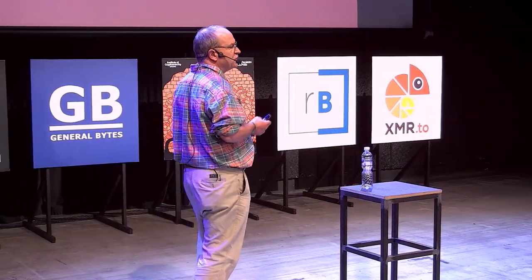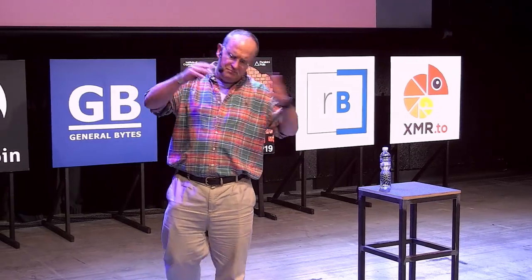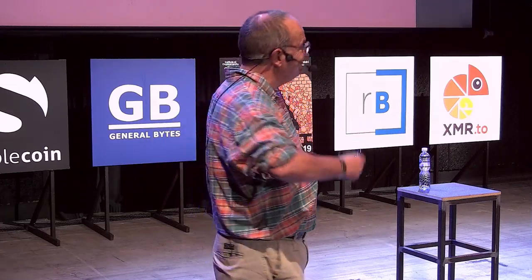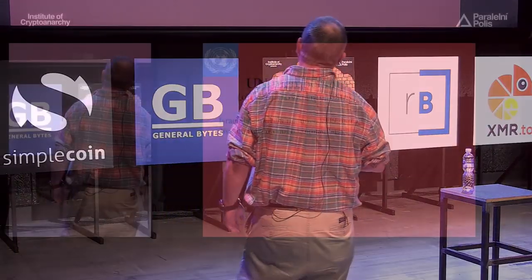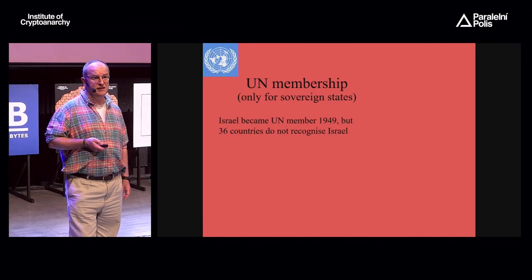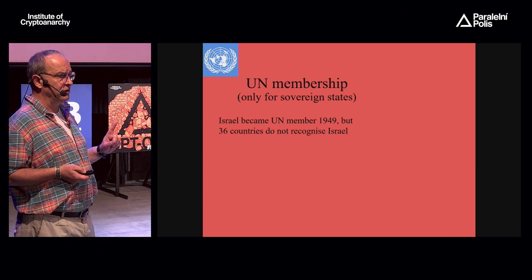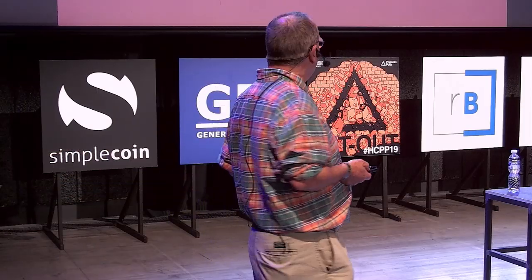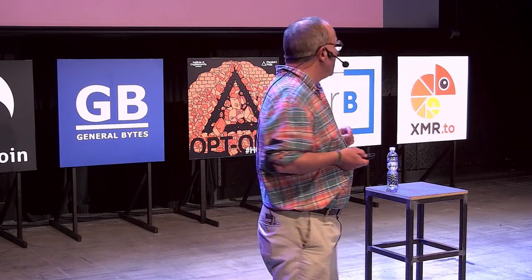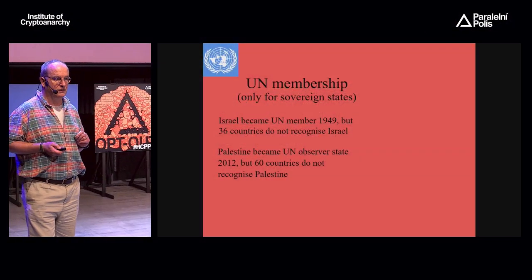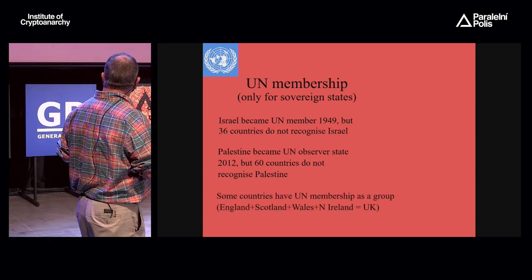You might think membership of the United Nations should be the gold standard, as it's the club for sovereign states. But it's not so simple. Israel became a UN member in 1949, but a large number of countries don't recognise the existence of Israel at all. Likewise, Palestine has become a UN observer state, but an even larger number of countries don't recognise the existence of Palestine.